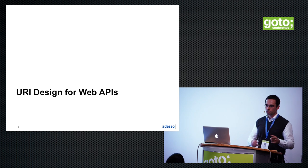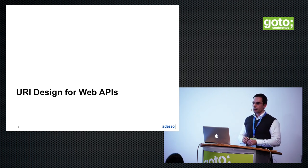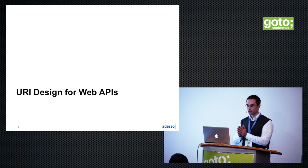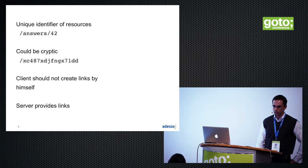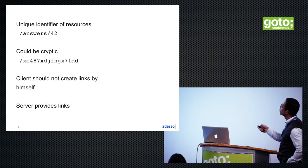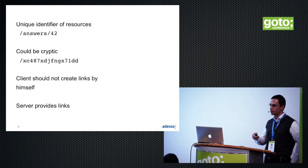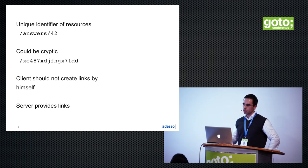Oliver spoke about domain-driven design and how it can be used to identify resources and their root aggregates. I concentrate now on URI design, which is also very important for web API design — and I am saying web APIs more generally, not just REST APIs. A URI is, of course, a unique identifier for a resource. Here I have an example: 'answers/42'. I am sure you know which answer I mean — it is the answer to life, the universe, and everything.